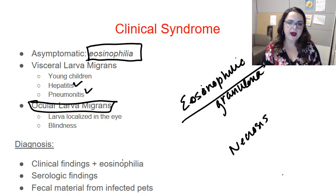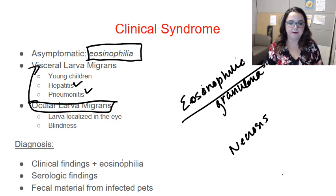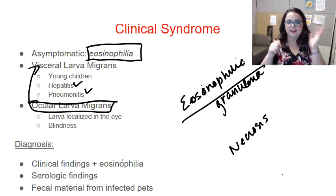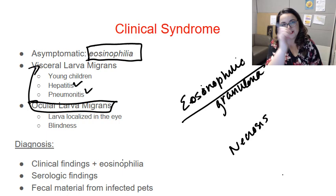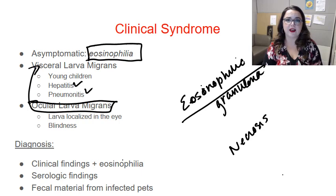Ocular larvae migrans can actually be the sole manifestation of toxocara infection, even without any antecedent history of VLM. It happens in older children and adolescents — as we get older we wash our hands more but we touch our eyes and faces. The larvae localize in the eye and produce a granulomatous response. Common symptoms are unilateral vision impairment, which can lead to failing vision and subsequent strabismus.